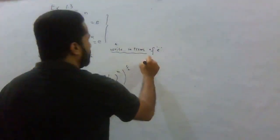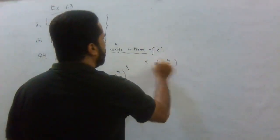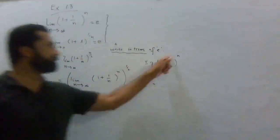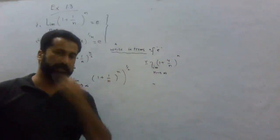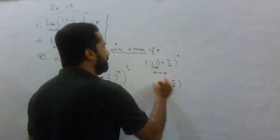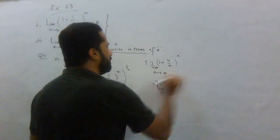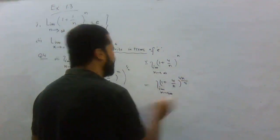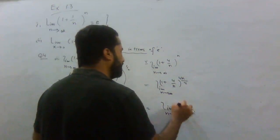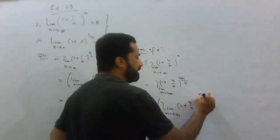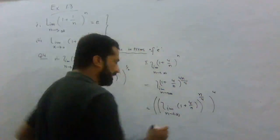Another question: evaluate limit as n approaches infinity of (1 + 4/n)^n. Here you have 4/n inside the bracket and exponent n. To apply the e formula, we divide and multiply: rewrite as (1 + 4/n)^(n/4 × 4), that is [(1 + 4/n)^(n/4)]^4. We apply the standard formula to the inner bracket.